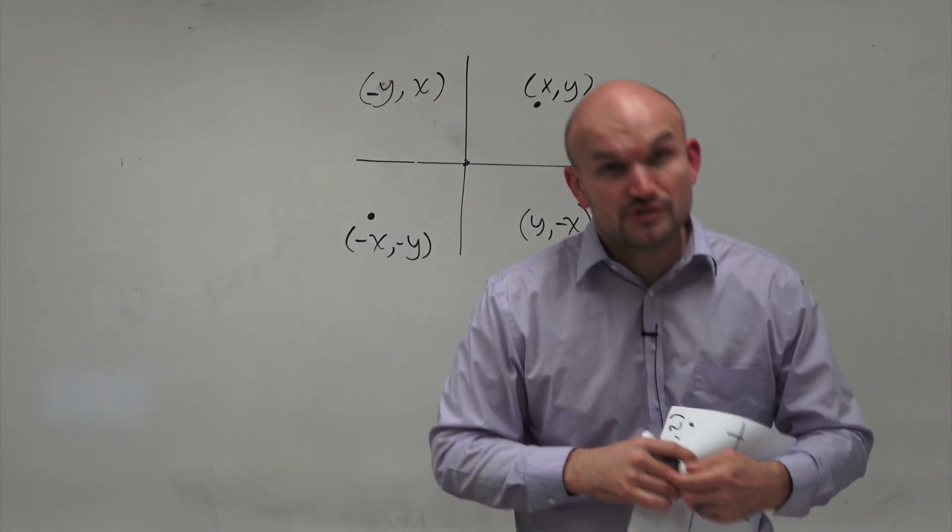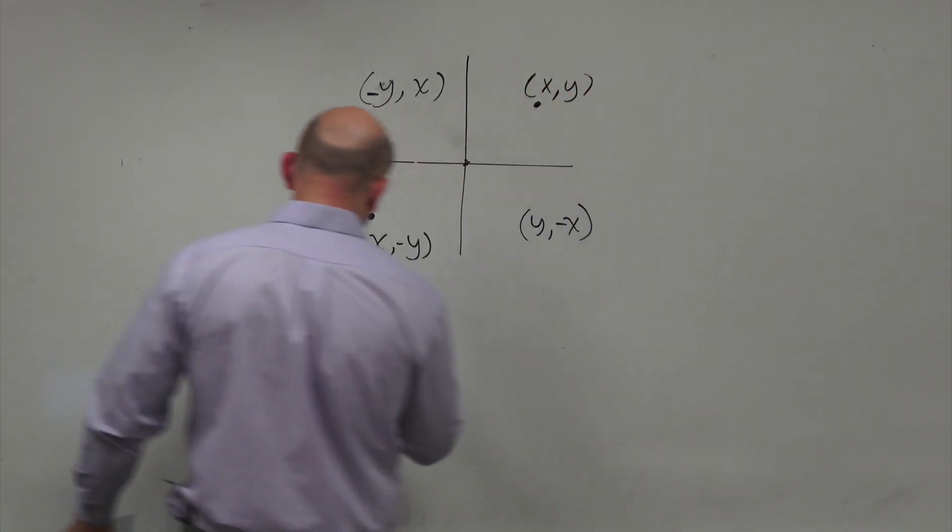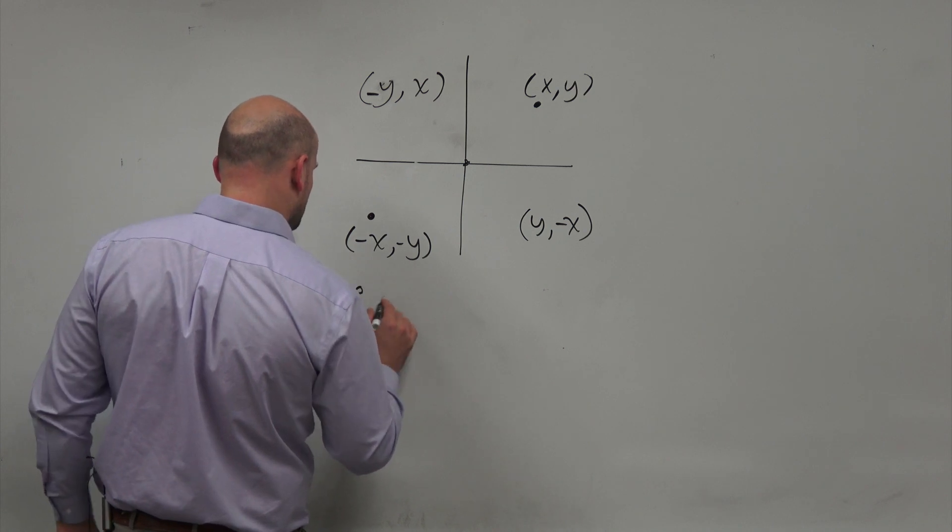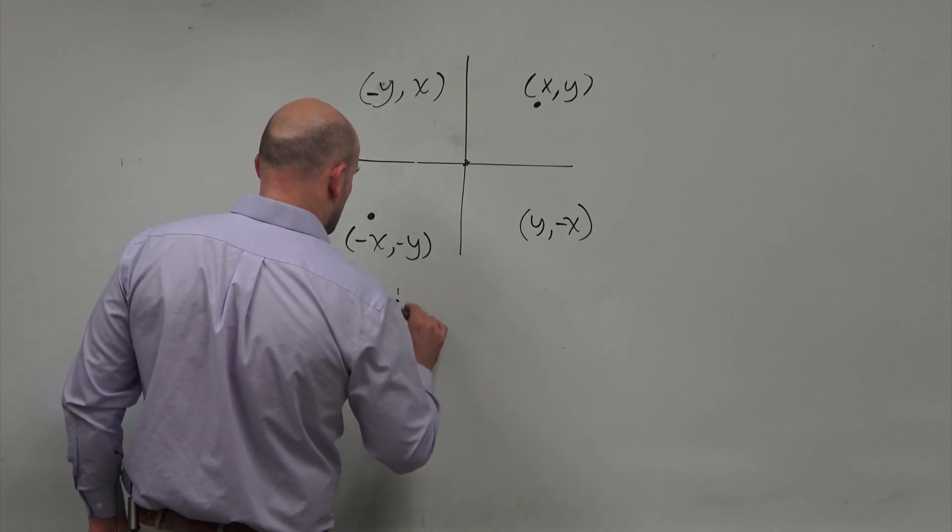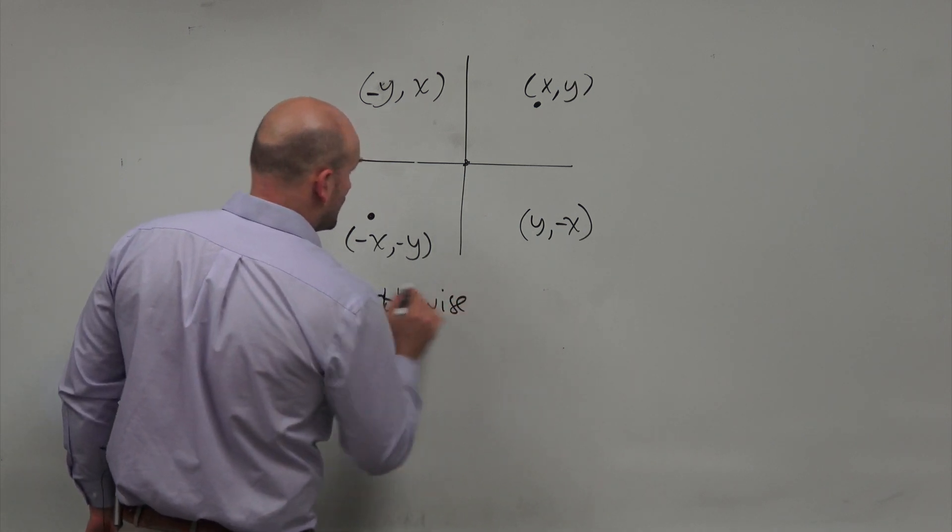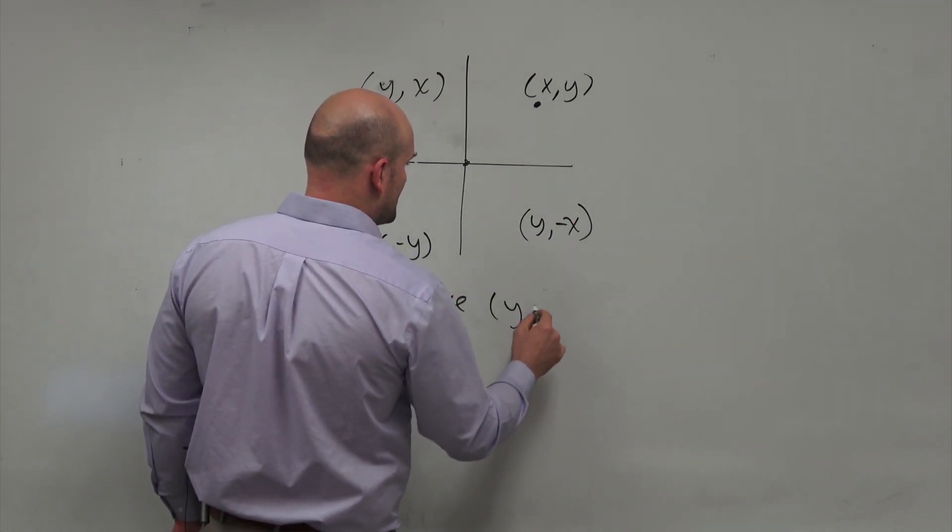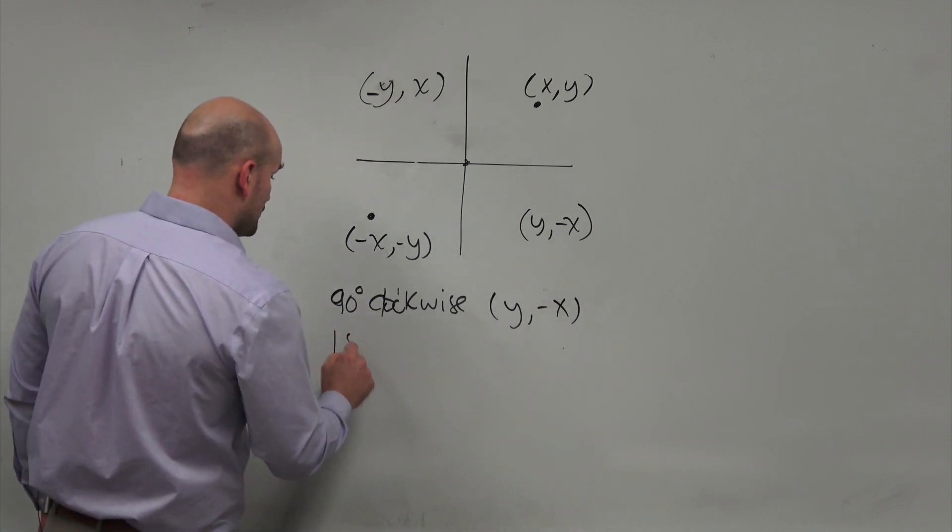So typically, students will go and look at this, and we'll go ahead and say the clockwise, a 90 degree rotation for my coordinate point. And we can go ahead and represent that as a clockwise rotation as y comma negative x. And that's going to be the rule.